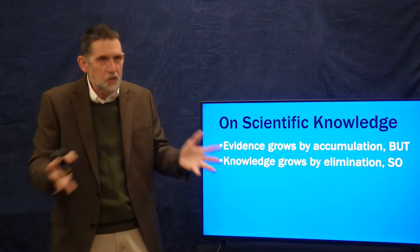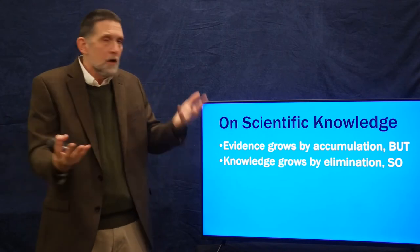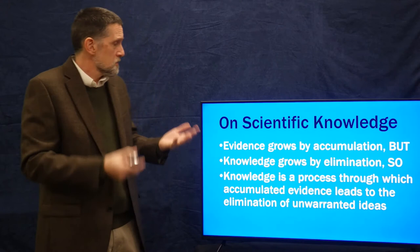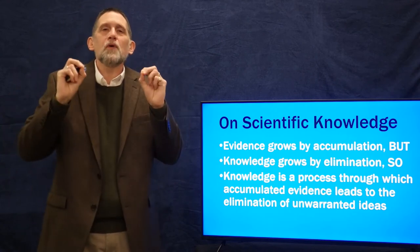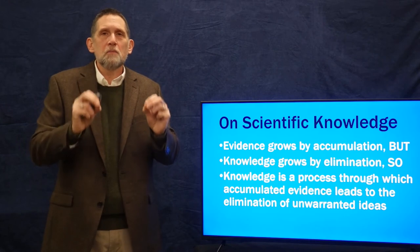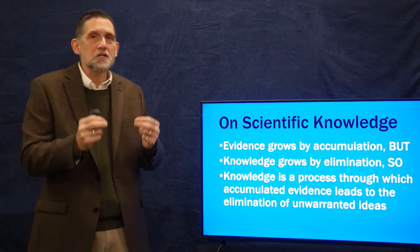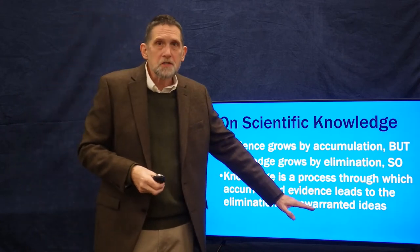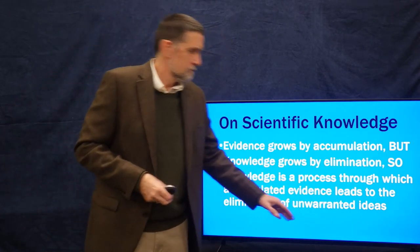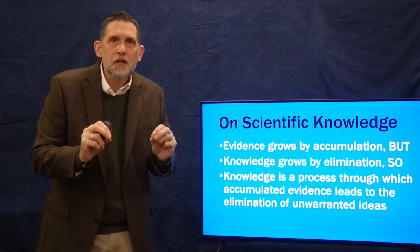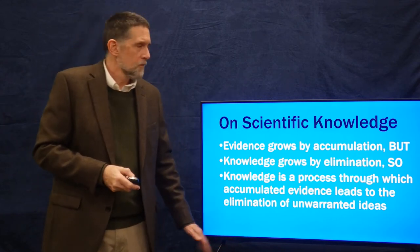But think about this. Evidence, as you're testing these theories, is being accumulated. Knowledge grows by eliminating those ideas that don't have support. That seems kind of contrasting, so that knowledge has to be seen not as a thing, not as a truth, but as a process. Knowledge is an ongoing process. It is not a thing. Knowledge is a process through which we come to better and better approximations of truth by accumulating evidence that leads to the elimination of unwarranted ideas. Warrant are those that have evidence supporting them and are coherent with other bodies of knowledge. That's what scientific knowledge is.